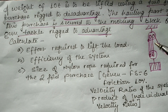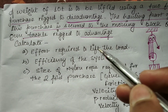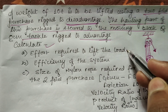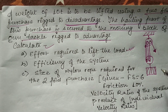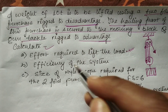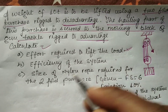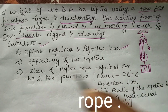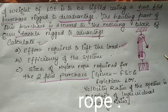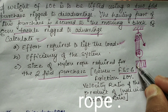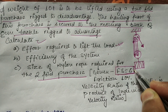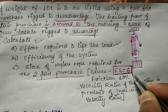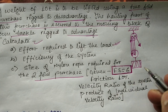In this question, we need to calculate: first, the effort required to lift the load; second, the efficiency of the system; and third, the size of the nylon wire required for the two-fold purchase. It is given that the factor of safety is 6. Friction is also given, and the resultant velocity ratio of the system is the product of the individual velocity ratios.